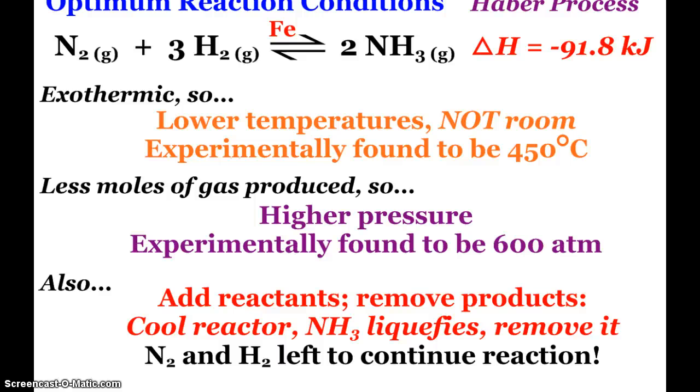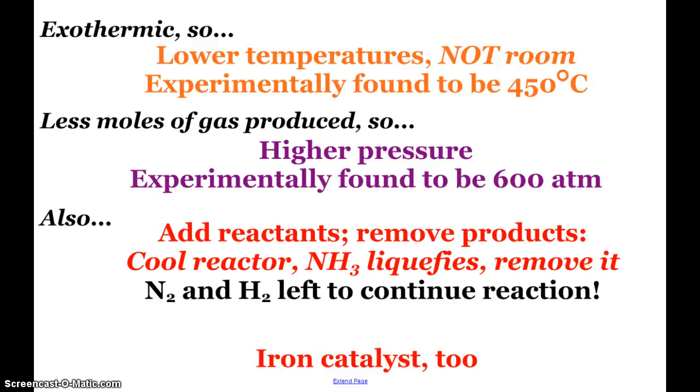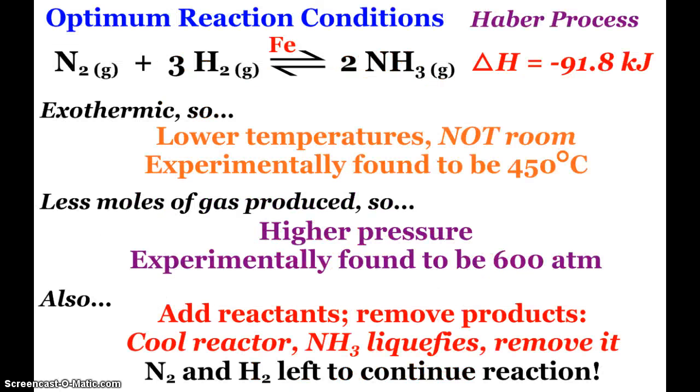So we cool our reactor. The ammonia liquefies, and it can be removed. The nitrogen and hydrogen are left behind to continue to react. Why does the ammonia liquefy before nitrogen and hydrogen? Intermolecular forces, larger molar mass. And so we're going to see the ammonia liquefying sooner than the nitrogen and hydrogen. And as we saw in the reaction, there is an iron catalyst. So that is also involved in our optimum reaction conditions.